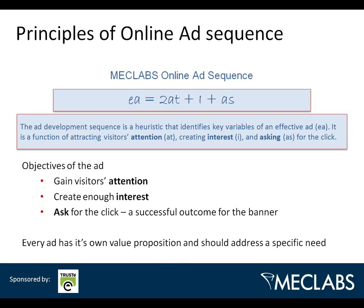This is the online ad sequence heuristic — very similar to the conversion index but specific for online ads. EA stands for effective ad. The most important part is getting somebody's attention by a factor of two, then you want to build interest, and then ask for the click. Every ad has its own value proposition and should address a specific need. If you're not doing that, it's not going to be effective.